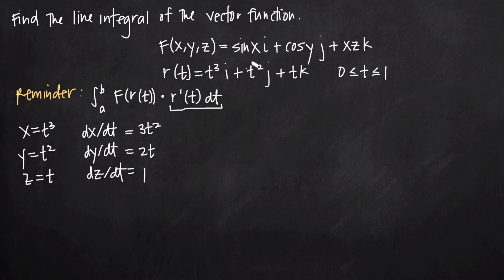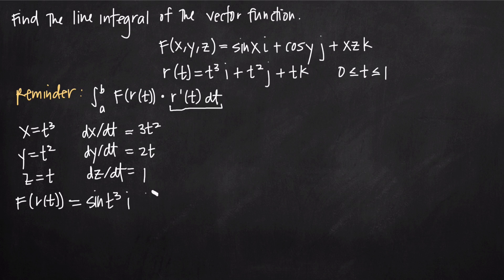Since we have values for x, y, and z, we can plug them into f. So f(r(t)) — taking the values from r(t) and plugging into f — gives us: sin(t³)·i, since x = t³; plus cos(t²)·j, since y = t²; plus t⁴·k, since x·z = t³·t = t⁴. Now we have f(r(t)) as needed for our integral.